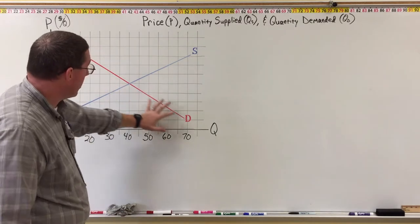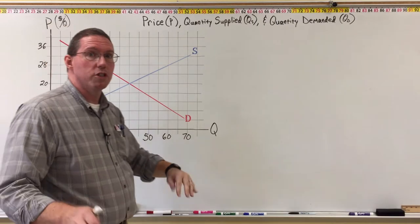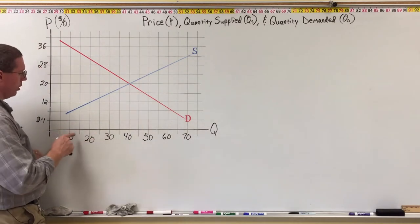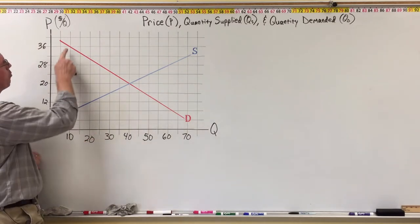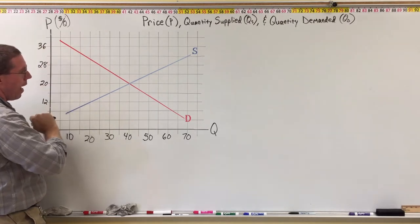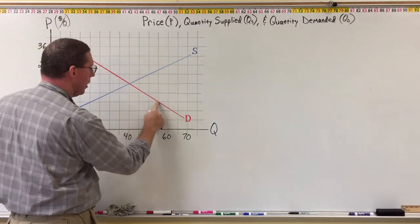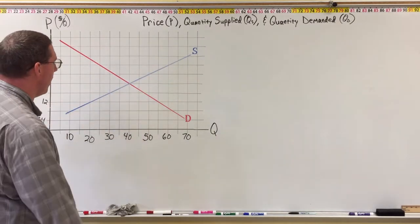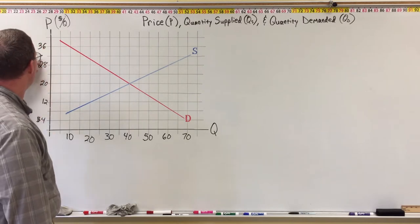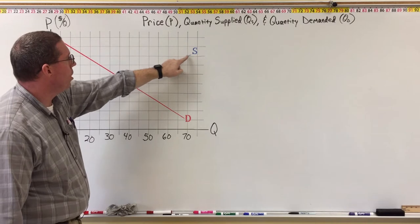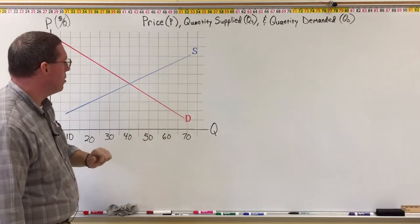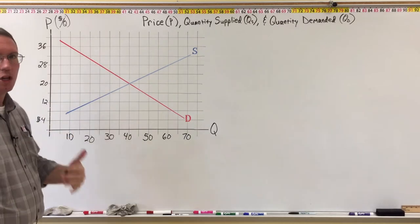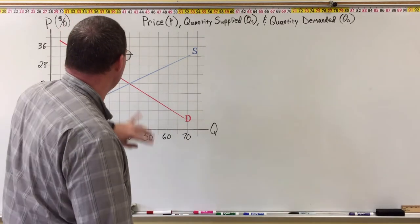The demand curve represents the degree to which buyers are willing and able to buy. They're willing to purchase only 10 units at a price of $36, but at a price of $12 they're willing and able to purchase 55 units. The supply curve is the same kind of idea — at a price of $32 sellers are willing and able to produce 70 units, but at $8 they'll only produce 10 units.